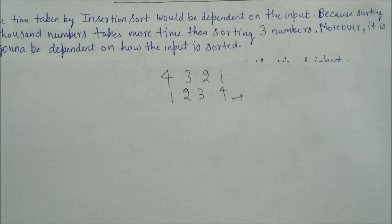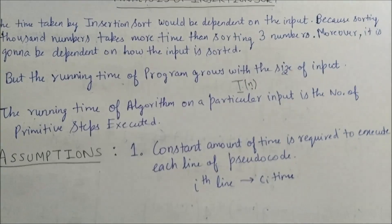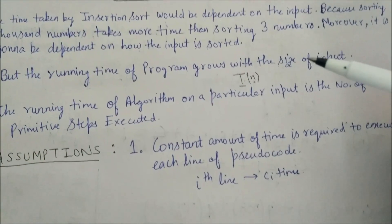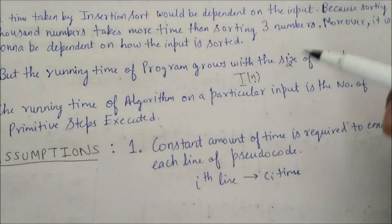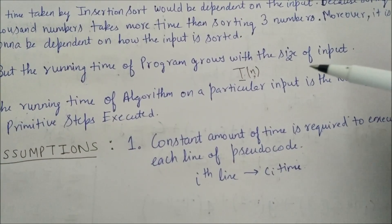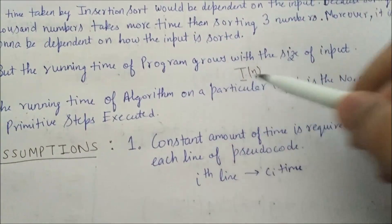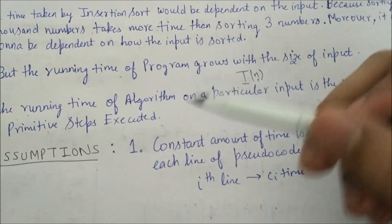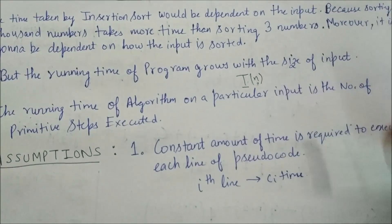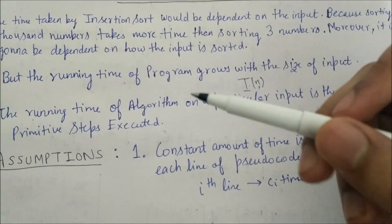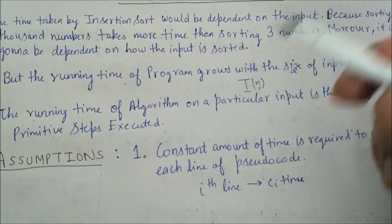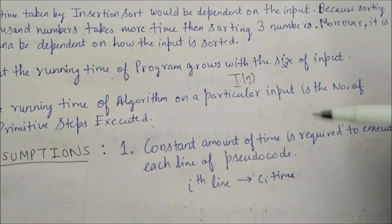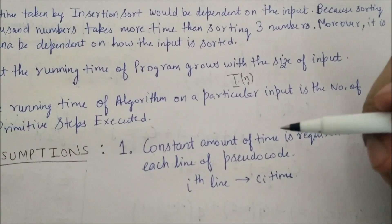The running time of a program grows with the size of input, so we describe it as a function of input size. The running time of the algorithm on a particular input is the number of primitive steps executed. We make the assumption that a constant amount of time is required to execute each line of the pseudocode.